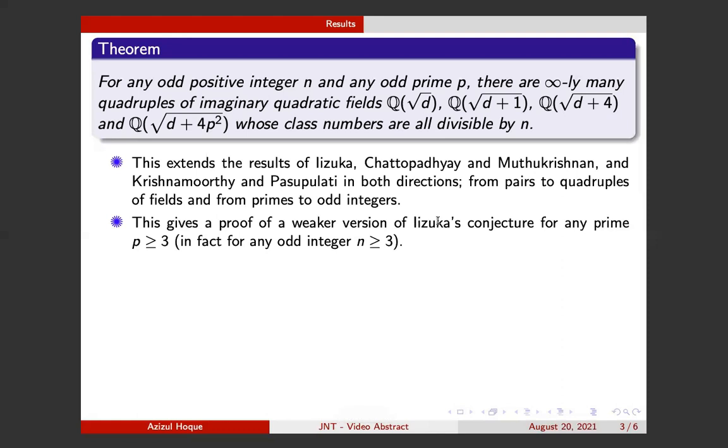It also gives a proof of a weaker version of Iizuka's conjecture for any prime p. In fact, it gives a proof of a weaker version of a generalization of Iizuka's conjecture.